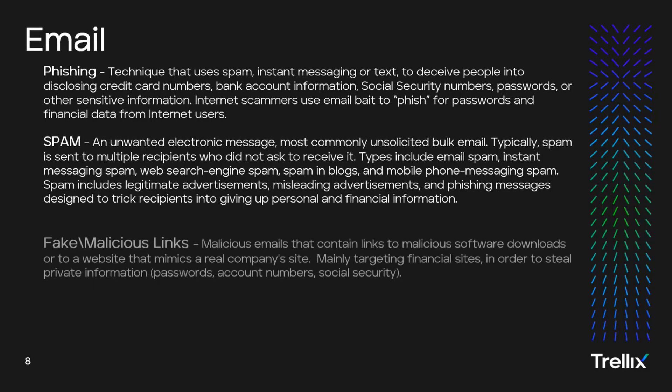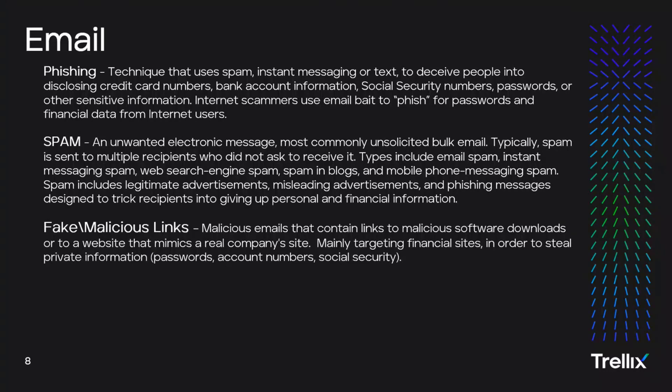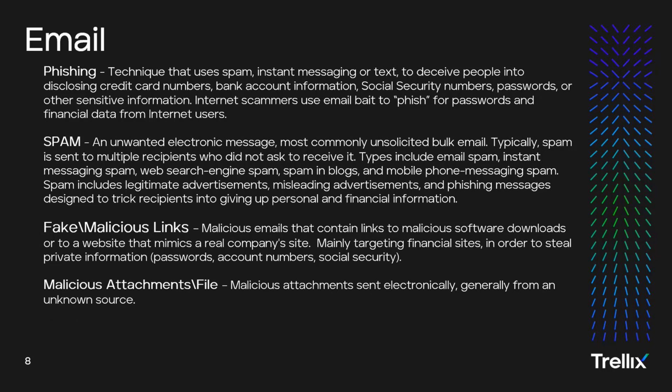Next up are fake or malicious links — malicious emails that contain links to malicious software downloads or to a website that mimics a real company's site, mainly targeting financial sites in order to steal private information such as passwords, account numbers, and social security numbers. Some examples include phishing links for credential theft, spoofed websites, or next stage downloaders, droppers, or exploits. Next under email is malicious attachments or files — malicious attachments sent electronically, generally from an unknown sender. Examples include spear phishing attachments such as Agent Tesla, Cobalt Strike attacks, Emotet, and APT ransomware campaigns.